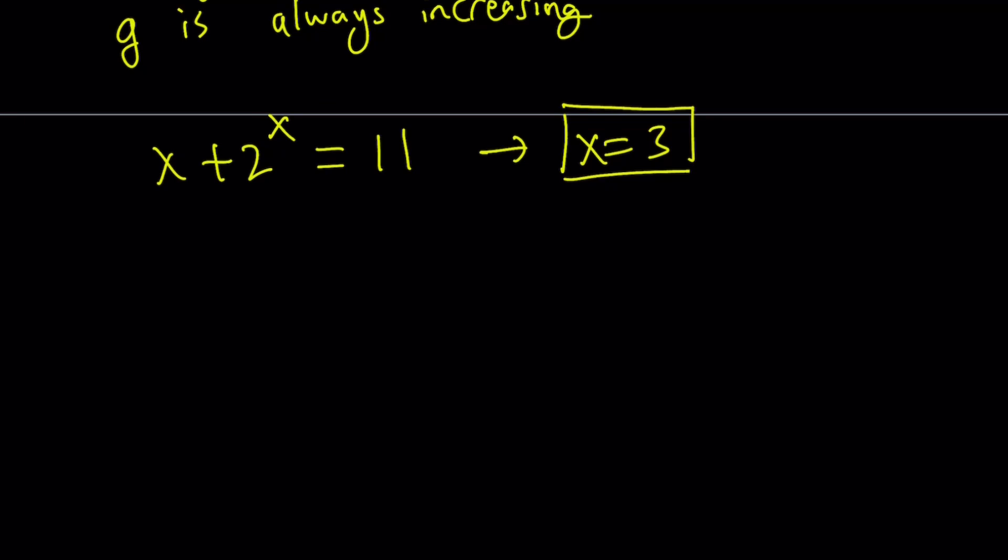Well, there's something called a product log, so by using the product log function—and I think Blackpenredpen talks about it a lot, so you can definitely check some of his videos—we have a special function, the product log function. When you input x times e^x, you're going to get x as a result. So you can work through this and see how you can apply it to find the x value. When it's a variable, it's a different story, obviously.